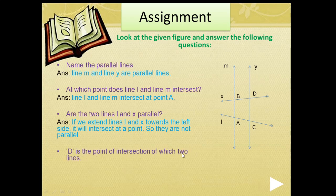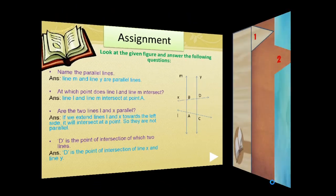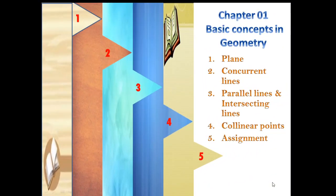The last question: D is the point of intersection of which two lines? Point D is the point of intersection of line X and line Y. So here we complete the lesson with the assignment.